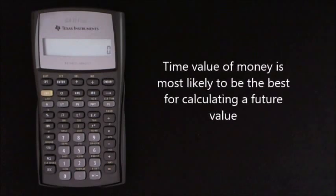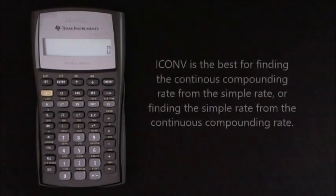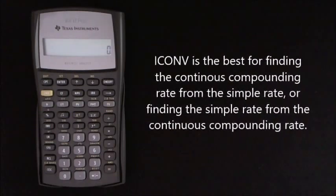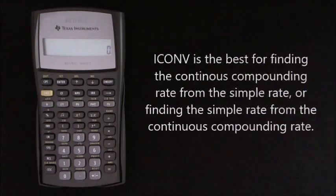Time value of money is most likely the best option for finding a future value. I think the ICONV is best for finding the continuous compounding rate from a simple rate or the simple rate from a continuous compounding rate.